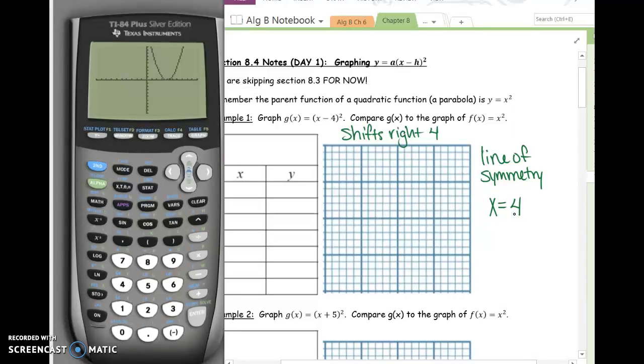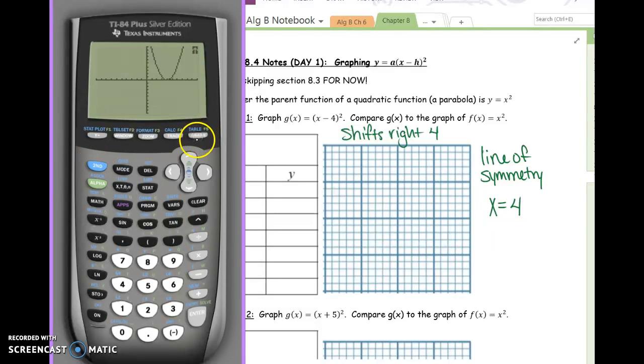This is going to help us in figuring out which points from our table to write down and graph. Because we want a couple points left of the symmetry line and a couple points to the right of the symmetry line. So you have to know where that symmetry line is. So go to your table. How do you go to the table? Second graph.